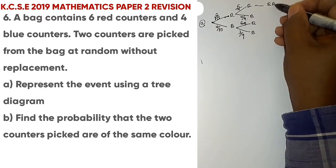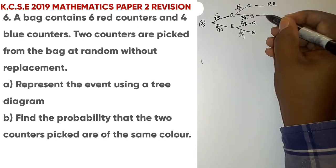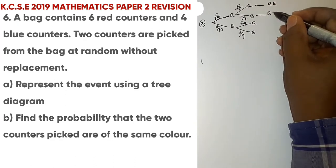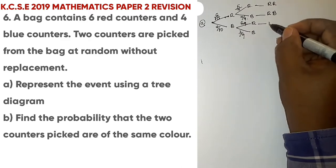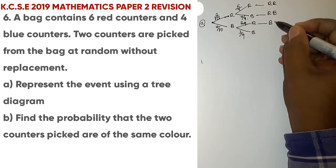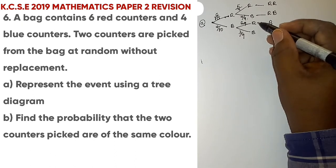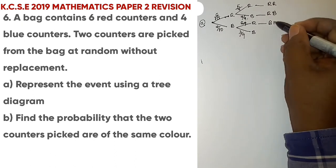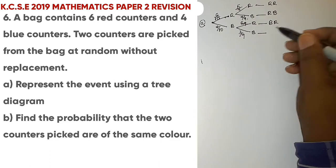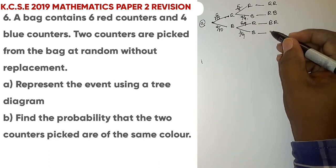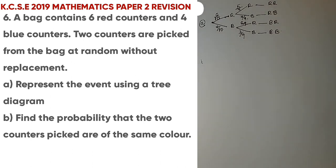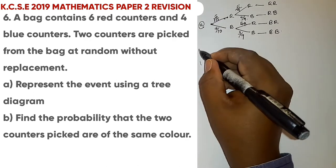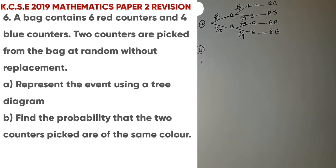So from the tree diagram, the two balls can either be: red and red, red and blue, blue and red, or blue and blue. Those are the four possible outcomes, and that is how you represent the event using a tree diagram.